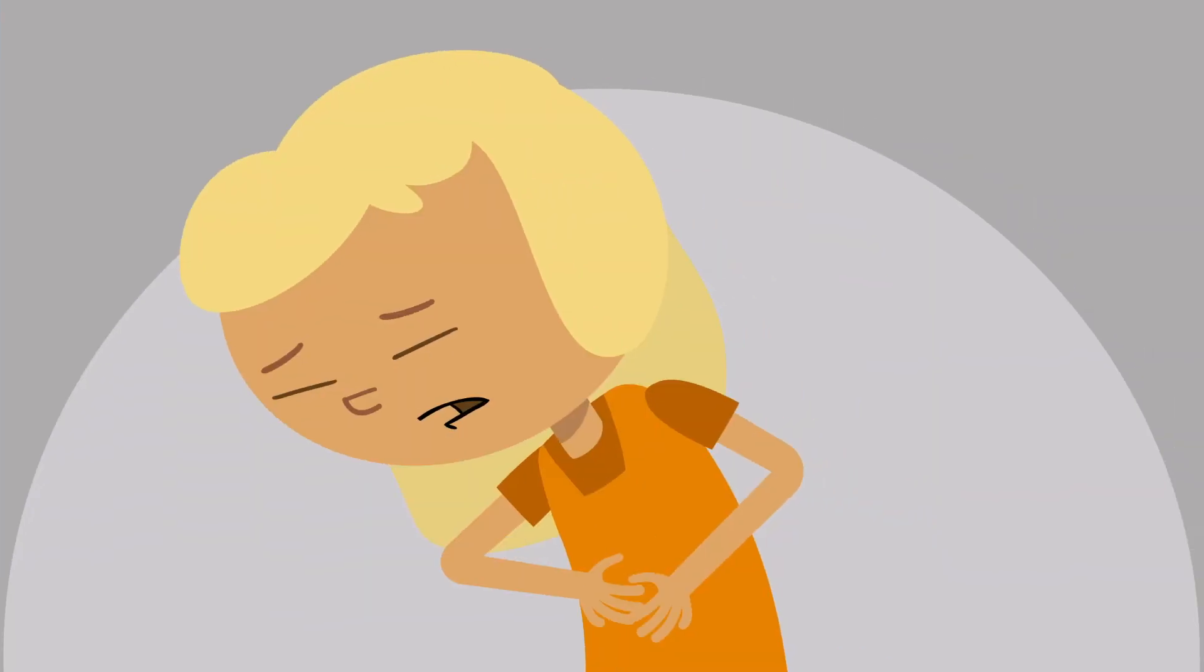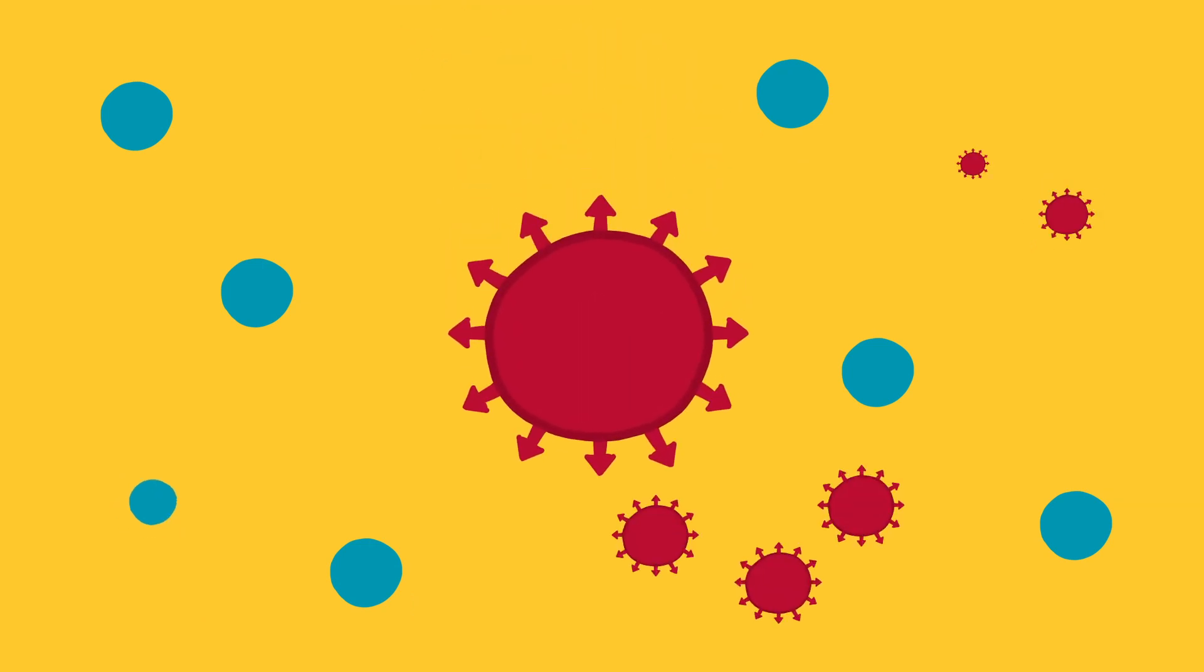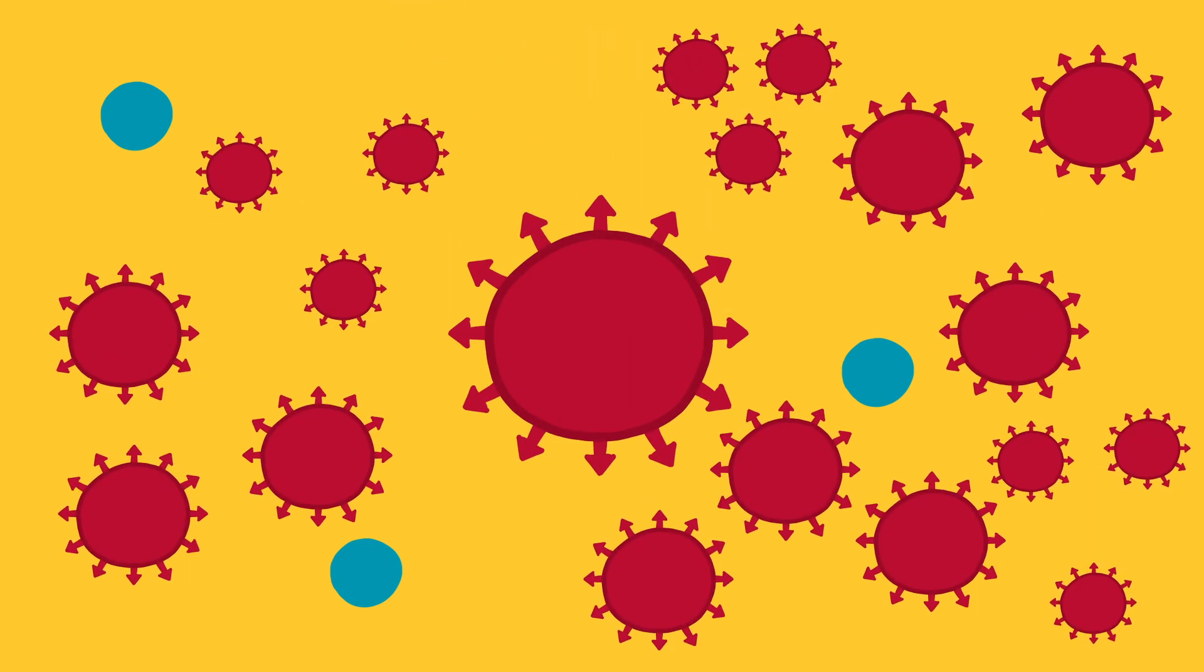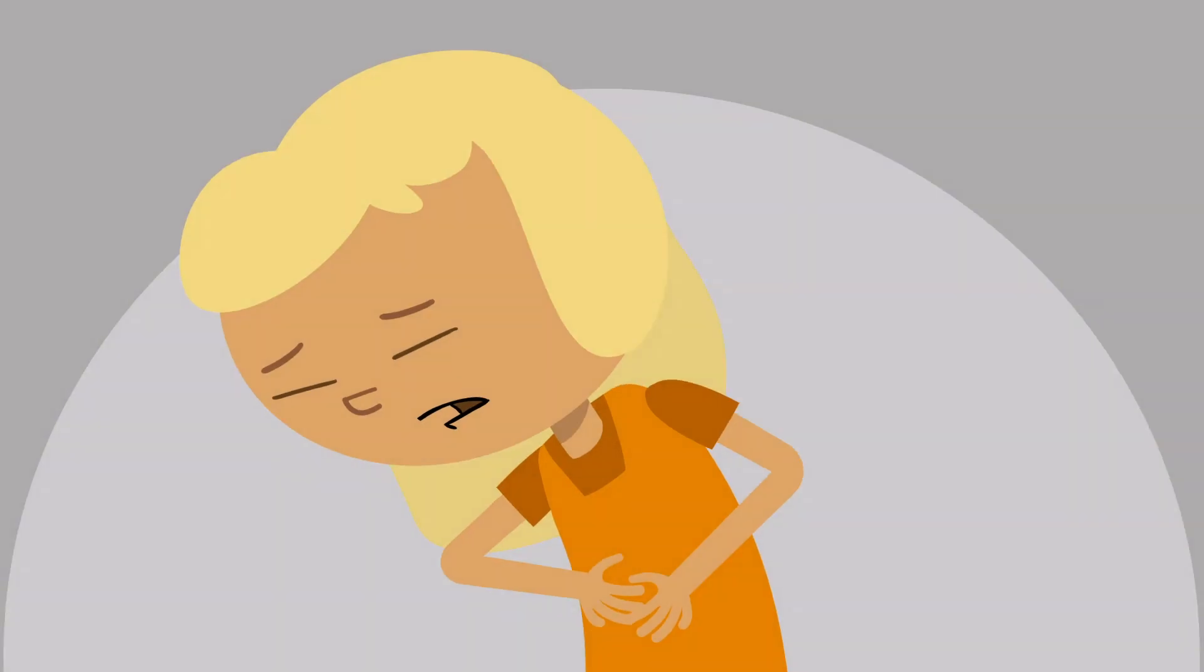When someone usually gets sick from a virus, that virus has been able to get into the body's cells and force them to make more of the virus. And until a body has had enough time to make antibodies to fight the virus, that person will stay sick.